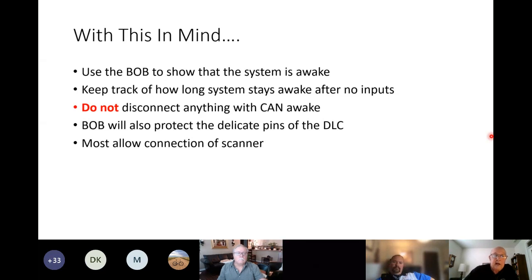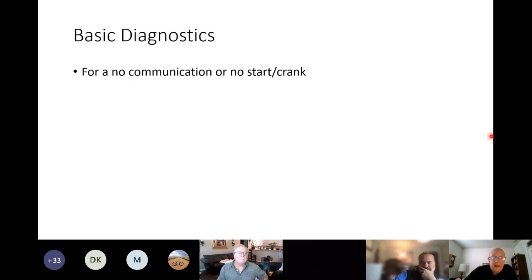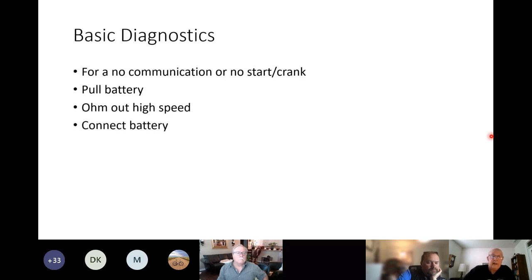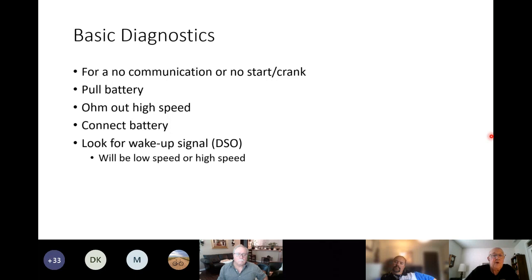Some breakout boxes allow you to connect a scanner, which isn't a bad idea. We need to be teaching more than just diagnostic trouble codes. For a no-communication or no-start condition, here's the simple procedure: first, pull the battery and use a multimeter on the high-speed CAN pins. A multimeter still is one of the best ways to determine whether the system has the ability to function — it doesn't tell you whether it's functioning, but whether it has the ability.